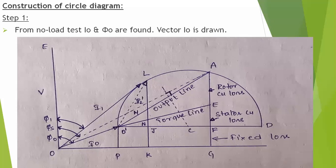Regarding the circle diagram, we are giving some formulas. First one: motor input. This motor input is root 3 VL LK — this is LK. Next, stator copper losses. All will be multiplied with root 3 VL. Stator copper loss here is JN — in terms of line voltage, root 3 VL JN.